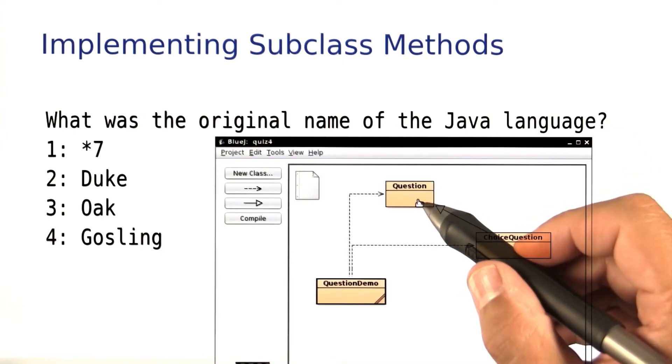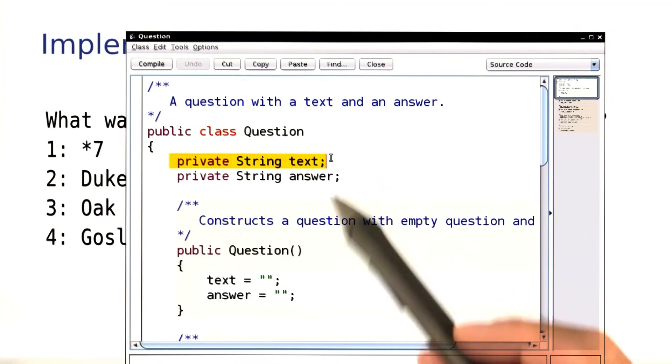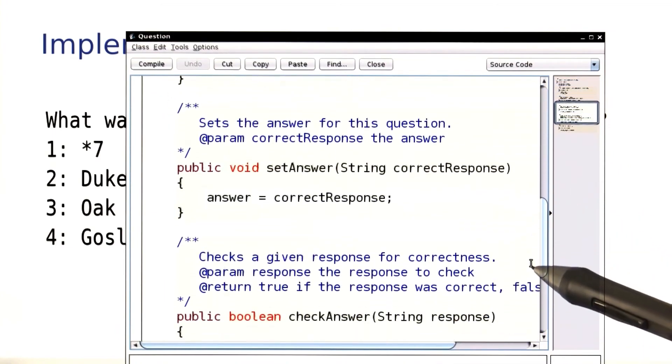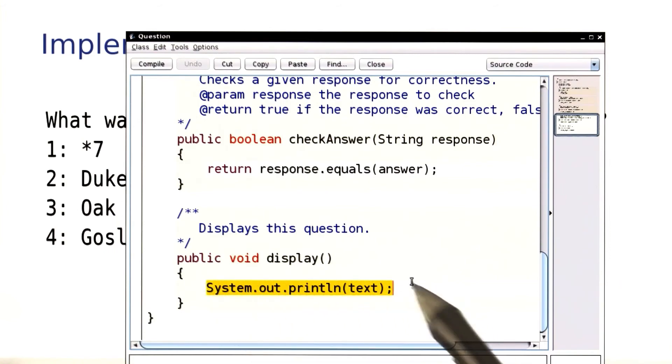Let's have a look at the superclass. Here is the question text. Do we have any method that lets us read it? None of these. But we could call display, and then it would print it. That's just what we need.